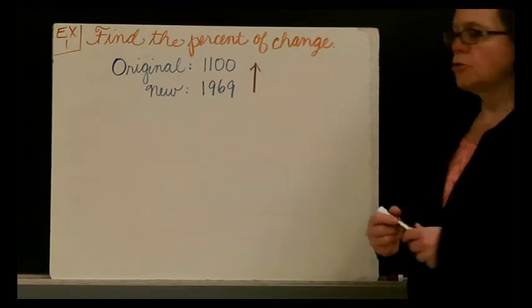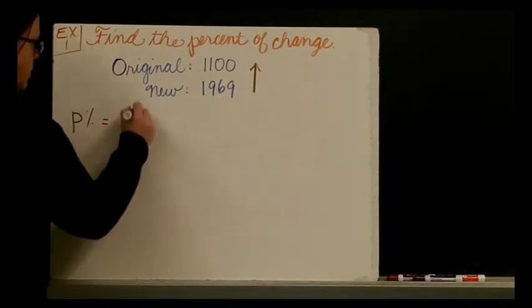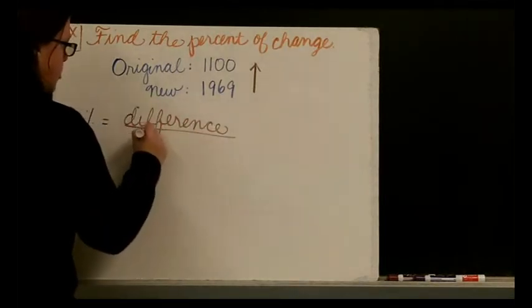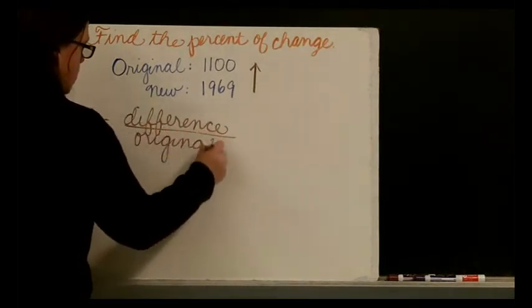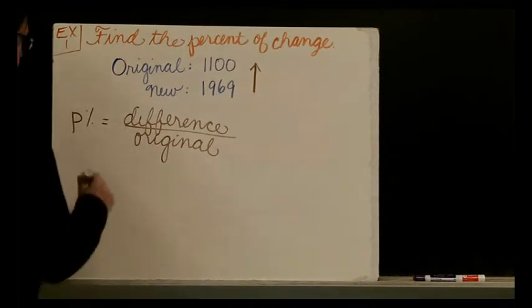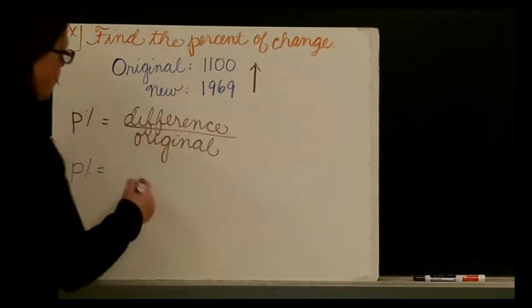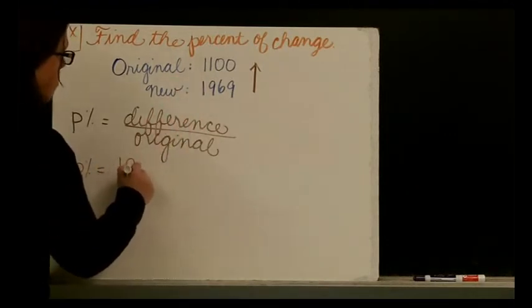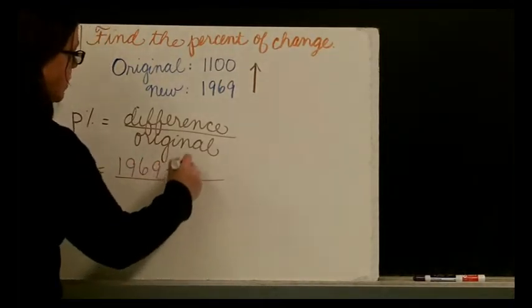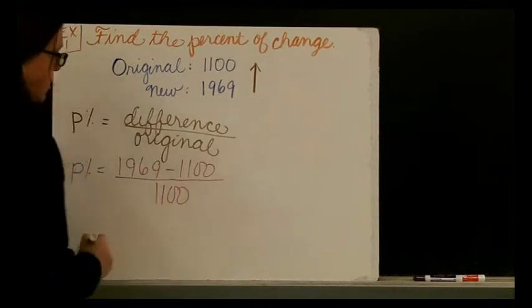Our next step after that is to write the percent of change formula. So the percent of change is the difference, I'm just going to shorthand it a little bit, divided by the original. And for this problem, what that means, because our next step says to rewrite the formula, but this time using the numbers that we have. So the difference between, we are going to write 1,969 minus 1,100, divided by our original amount, which is 1,100.